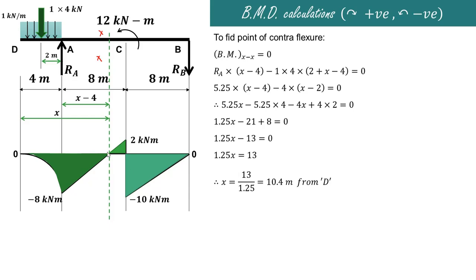The point of contraflexure is at 10.4 meters from D, where the bending moment diagram changes sign from negative to positive. In this way we can find the point of contraflexure and draw the shear force and bending moment diagram for a simply supported beam with a uniformly distributed load on the left hand side overhang and an applied bending moment. Thank you very much for watching.